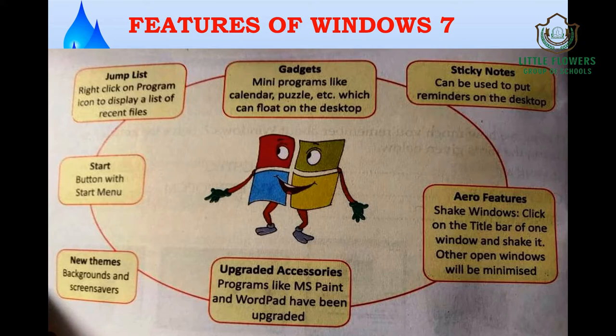We have upgraded accessories like MS Paint and WordPad, which have been upgraded with new features. Windows 7 has new themes like new backgrounds and new screensavers. There is a Start menu with a button, and we also have the Jump List — you can right-click on any program icon to display a list of recent files.